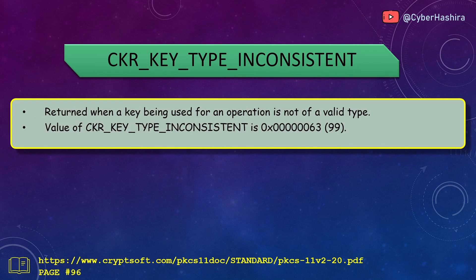CKR_KEY_TYPE_INCONSISTENT is returned when an invalid type of key is used for a crypto operation. For example, encrypting data using AES-CBC mode but with an RSA key — this kind of mismatch will result in CKR_KEY_TYPE_INCONSISTENT. Its value is 63 and is on page 96.